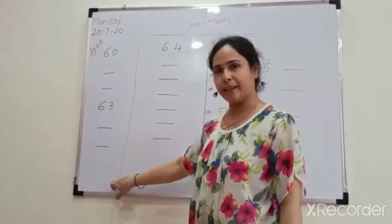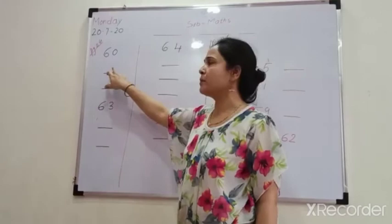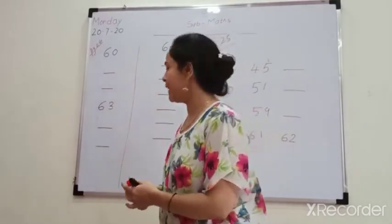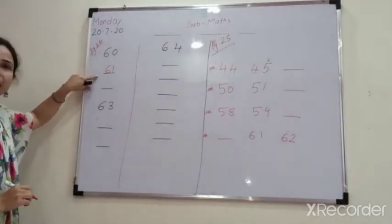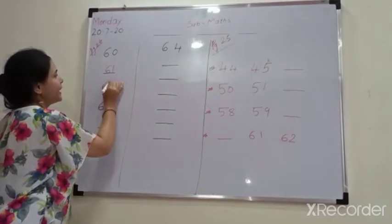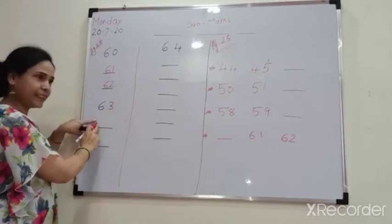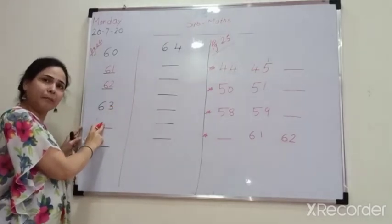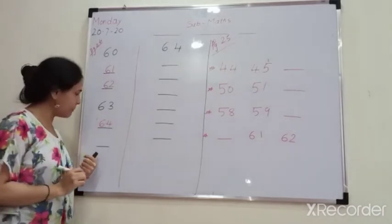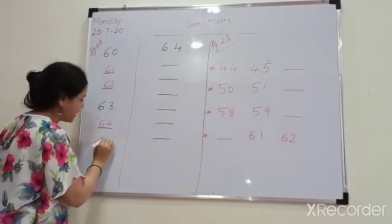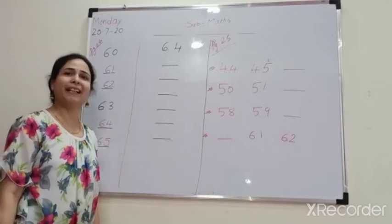So, first number — it's a standing line number. First number is 60. So, after 60, which number will come next, kids? Yes, very good. So, next number will come 61. After 61, which number will come next? It's 62. After 62, there is 63. After 63, which number will come next, kids? Yes, that is 64. After 64, which number will come next, kids? Yes, very good — that number is 65. I hope you all have the correct answers.